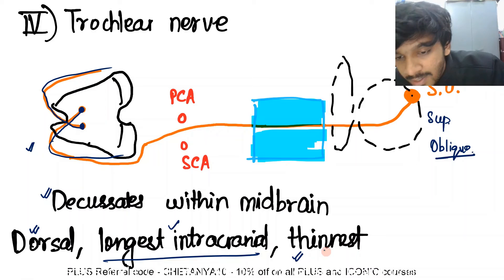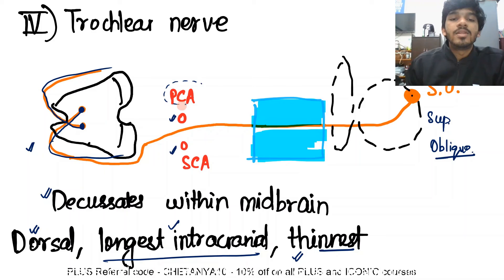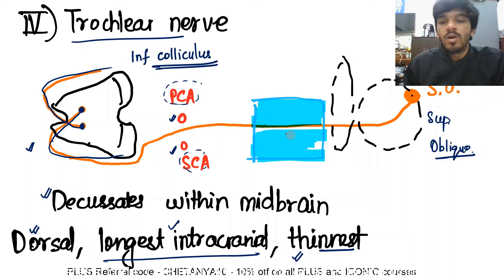The trochlear nerve is also the thinnest cranial nerve, as it only has to supply one muscle. Just like the oculomotor nerve, it passes between the posterior cerebral artery and the superior cerebellar artery. Its nucleus is located at the level of the inferior colliculus, just below the oculomotor nerve nucleus which is at the level of the superior colliculus.